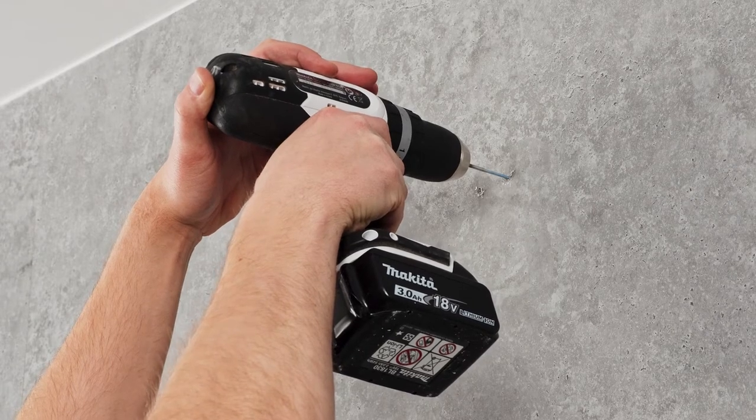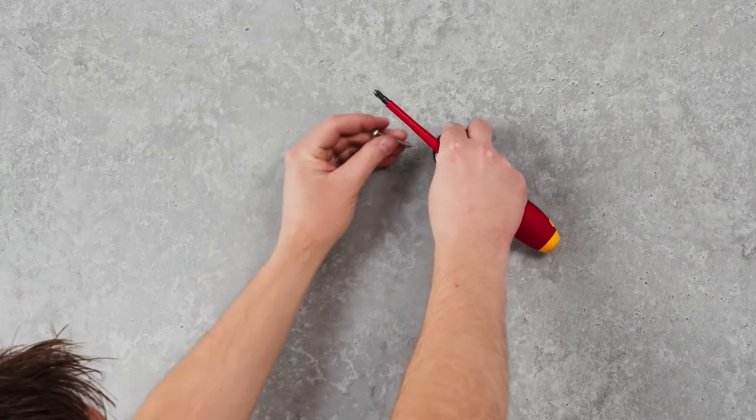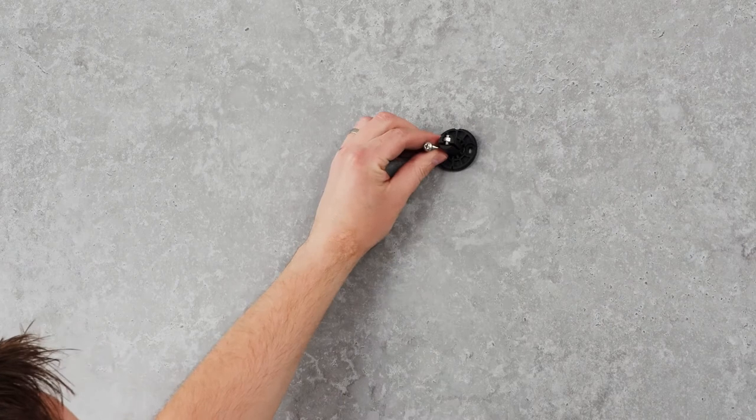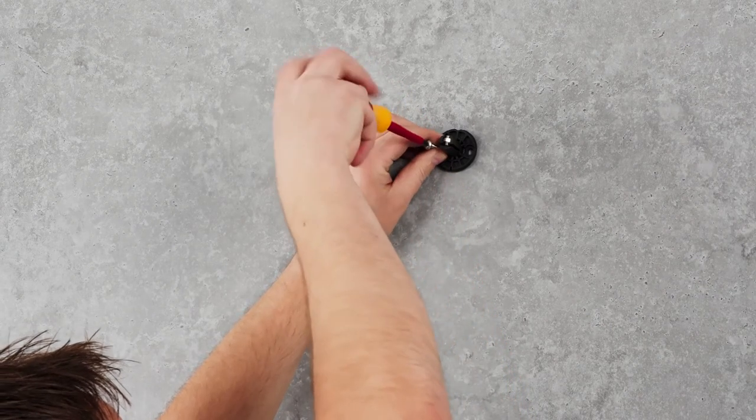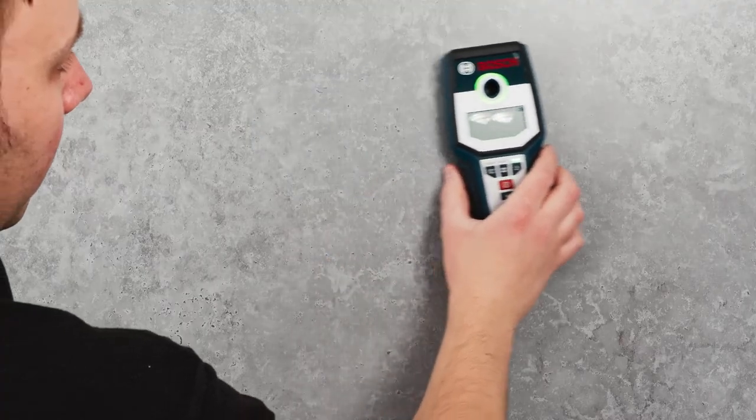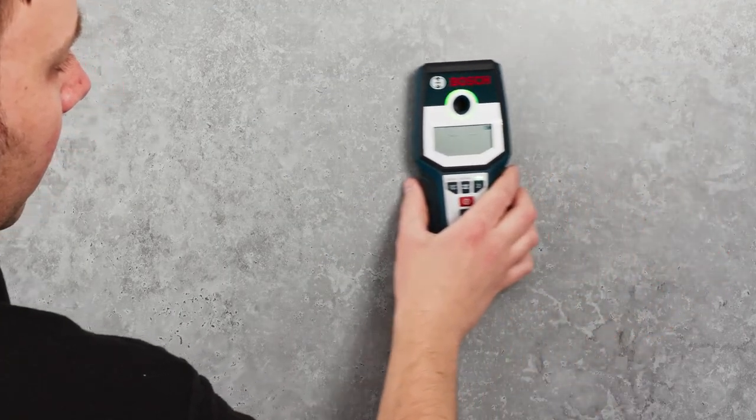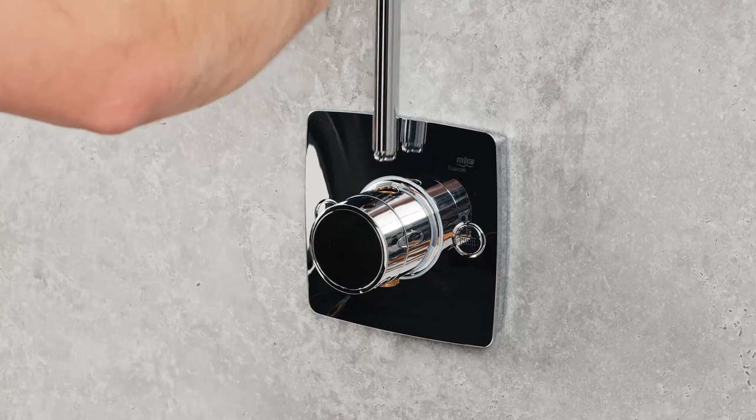The backplate assembly can then be marked, the wall drilled and secured into place using the fixing supplied or those more appropriate for the wall material if necessary. Using a stud detector will help in avoiding damage to surfaces within the cavity of the wall through drilling.